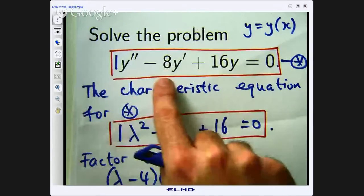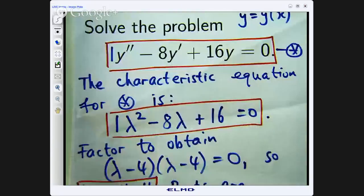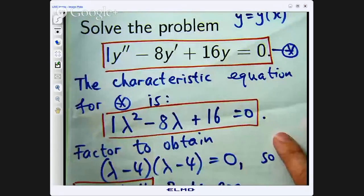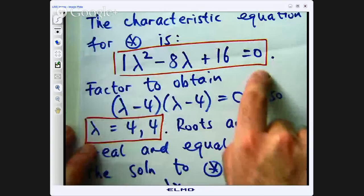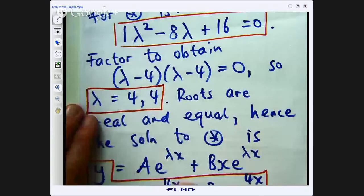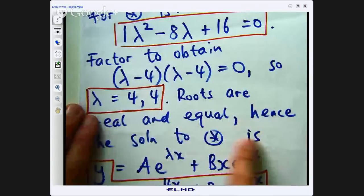You can split this negative 8 up into, say, negative 4y' minus 4y' and then make a substitution and form two first-order problems. So that's kind of where this method can come from, and then you can get this independently of this method. But the nice thing about the method I'm showing you is that it's very quick and it doesn't involve any calculus.